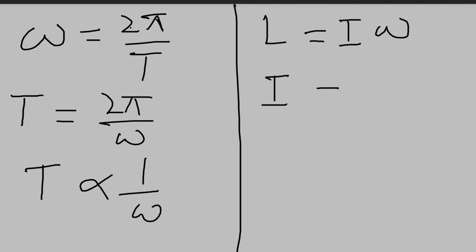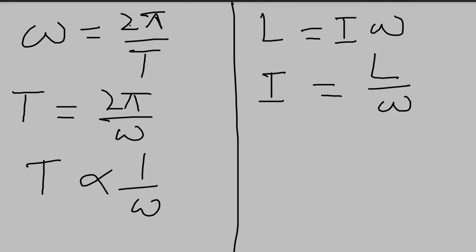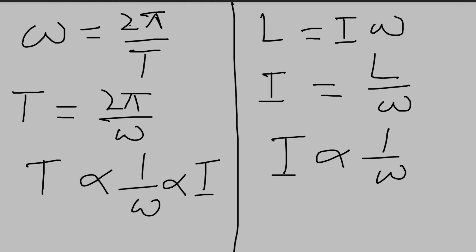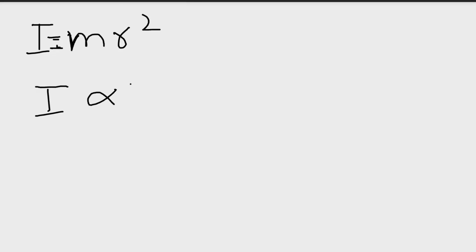Moment of inertia is equal to the ratio of angular momentum and angular velocity, so moment of inertia is also inversely proportional to the angular velocity. As moment of inertia is the product of mass and square of the radius, moment of inertia is directly proportional to the square of the radius.